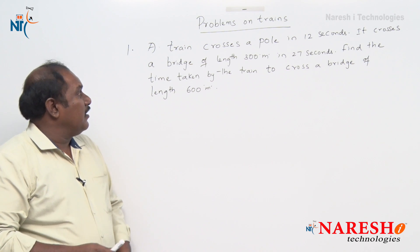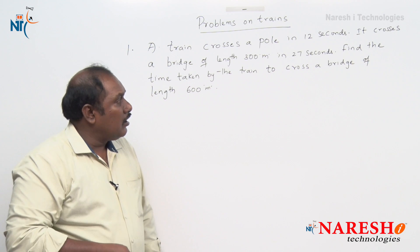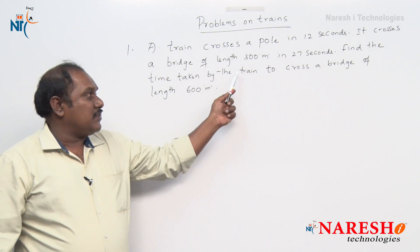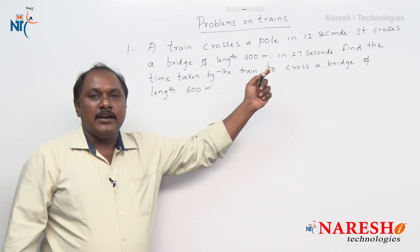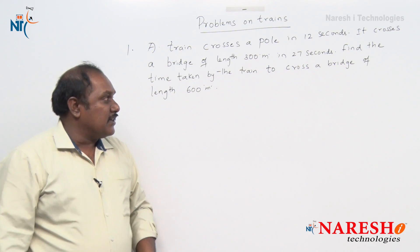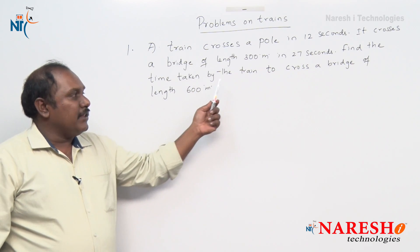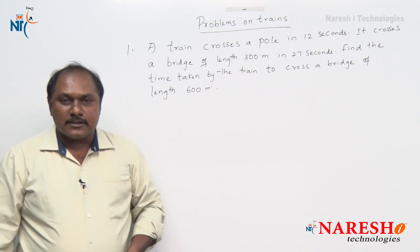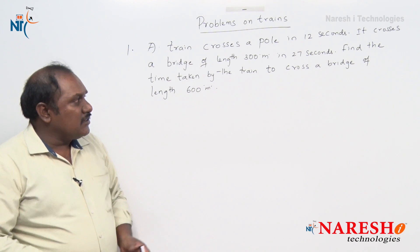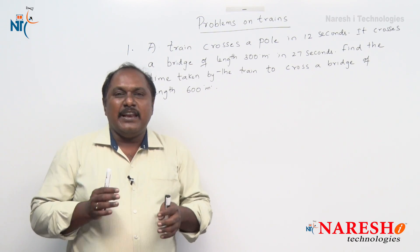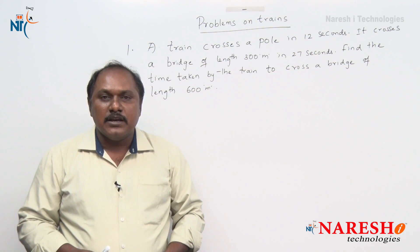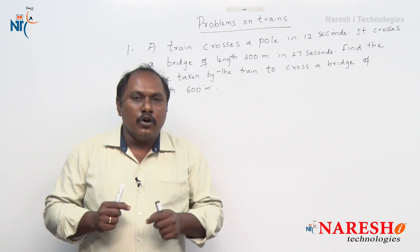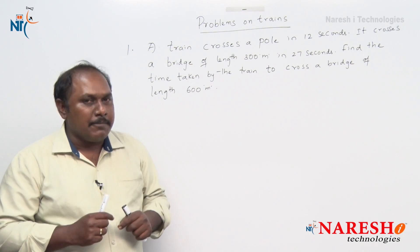The first question: a train crosses a pole in 12 seconds. It crosses a bridge of length 300 meters in 27 seconds. Find the time taken by the train to cross a bridge of length 600 meters. How do we answer this question without writing any equations or formulas in a very simple way? First, let us understand some basic points in this chapter.